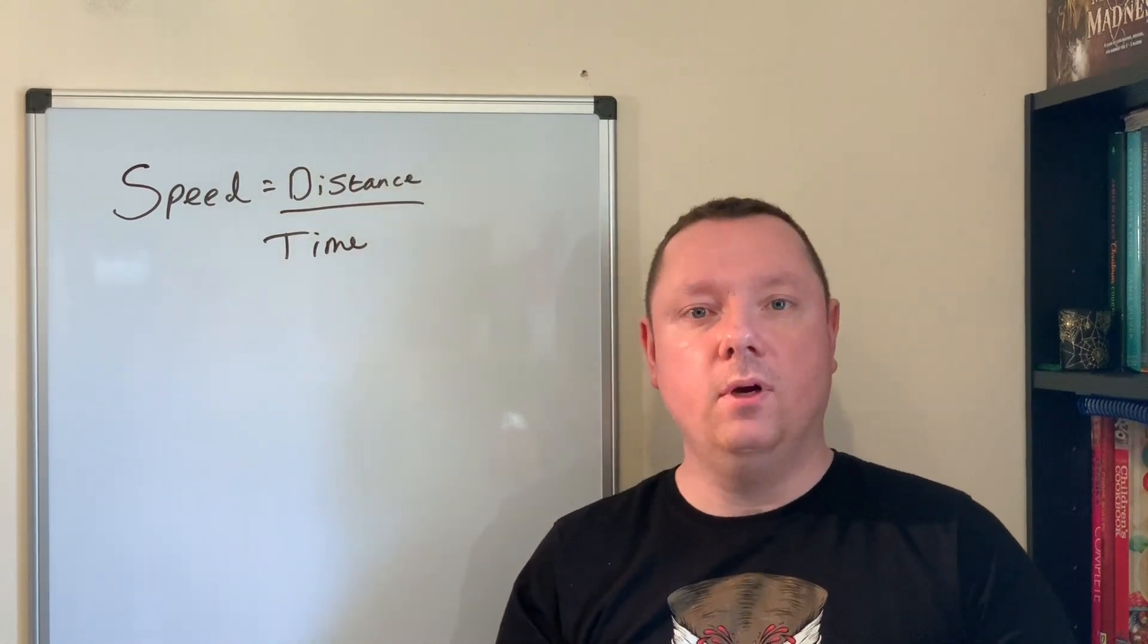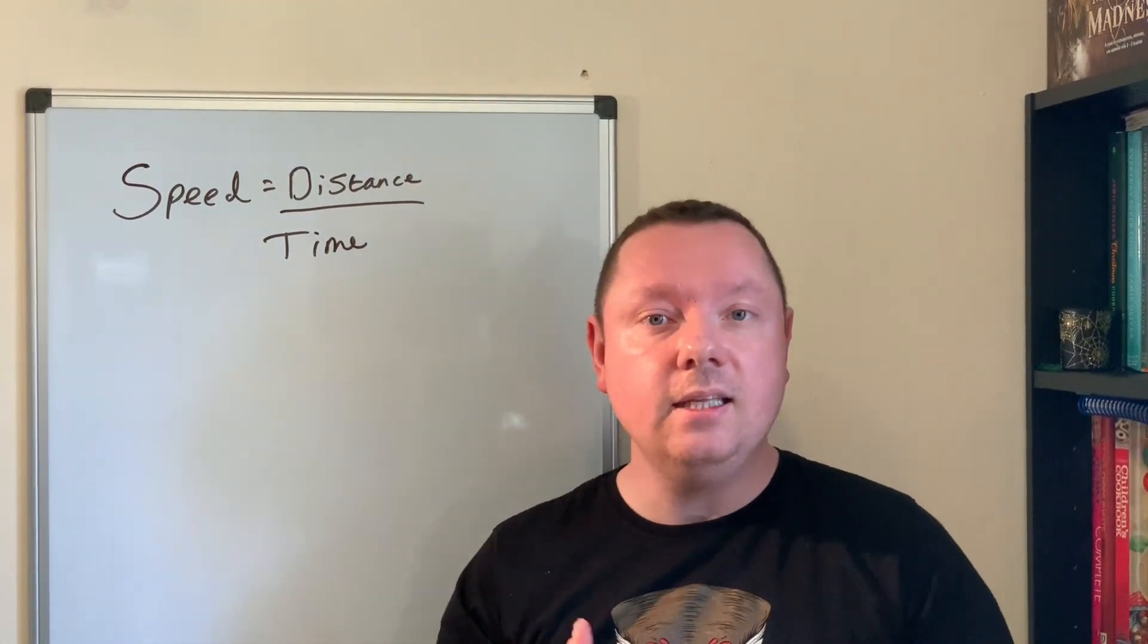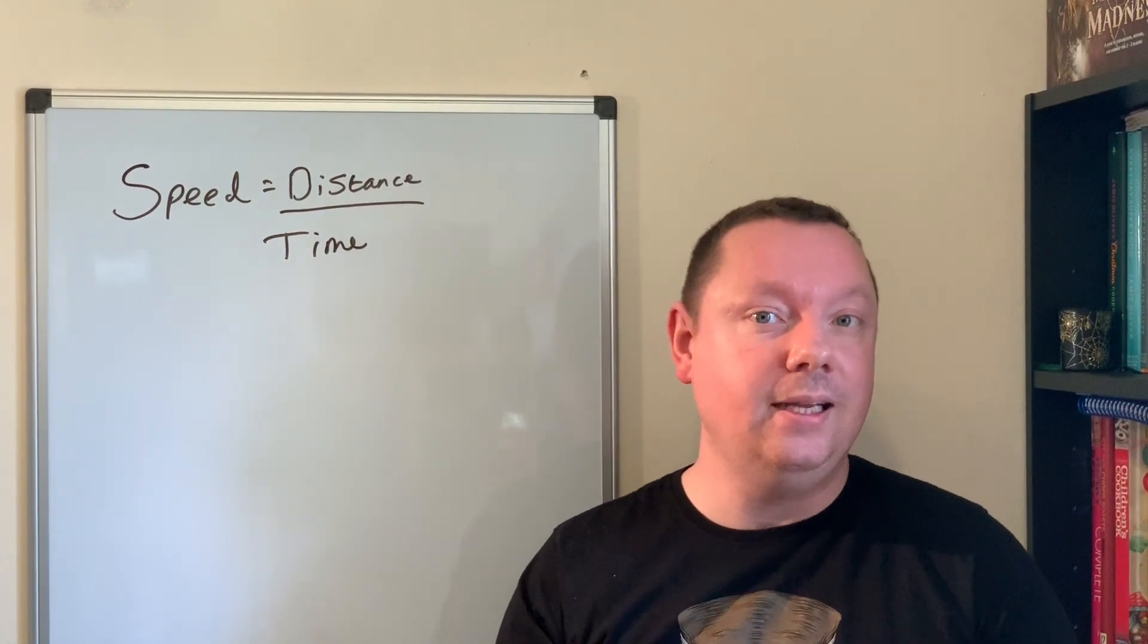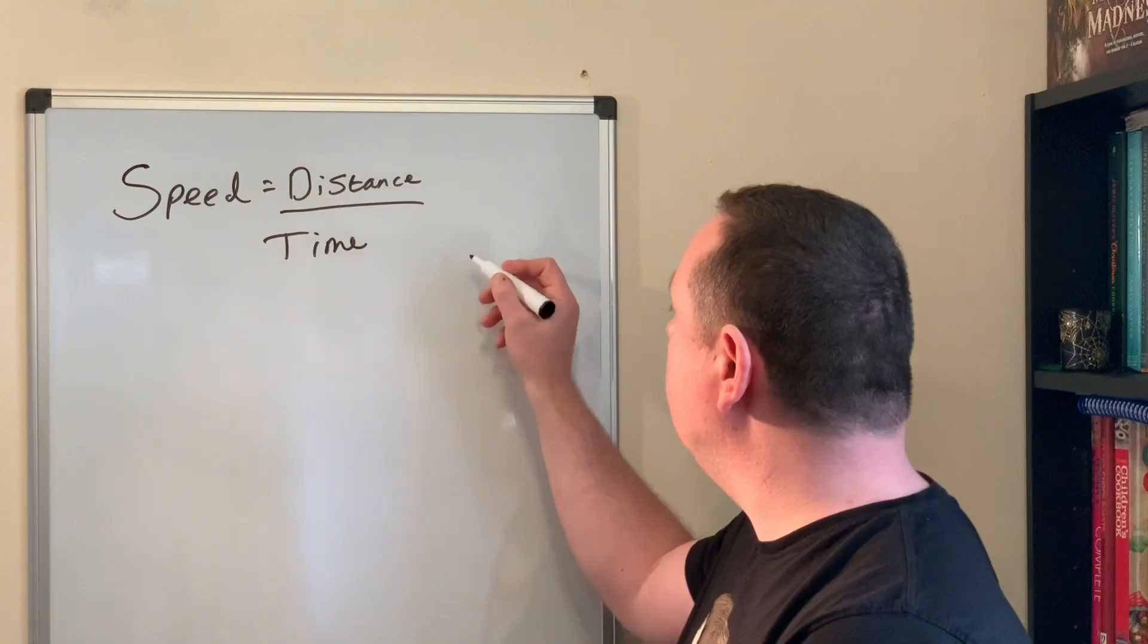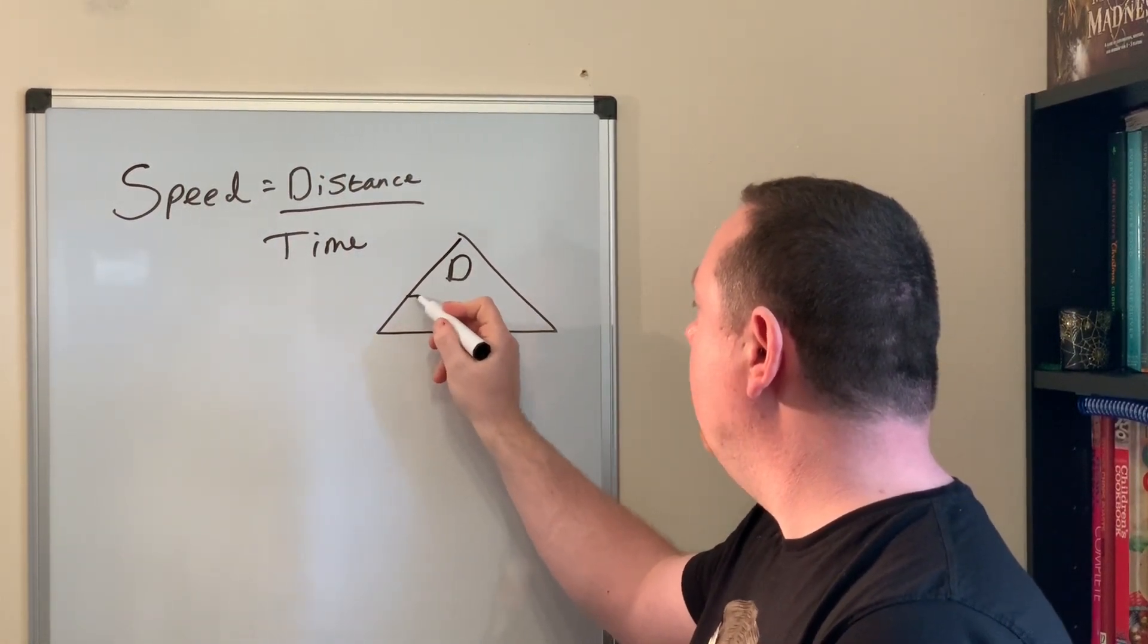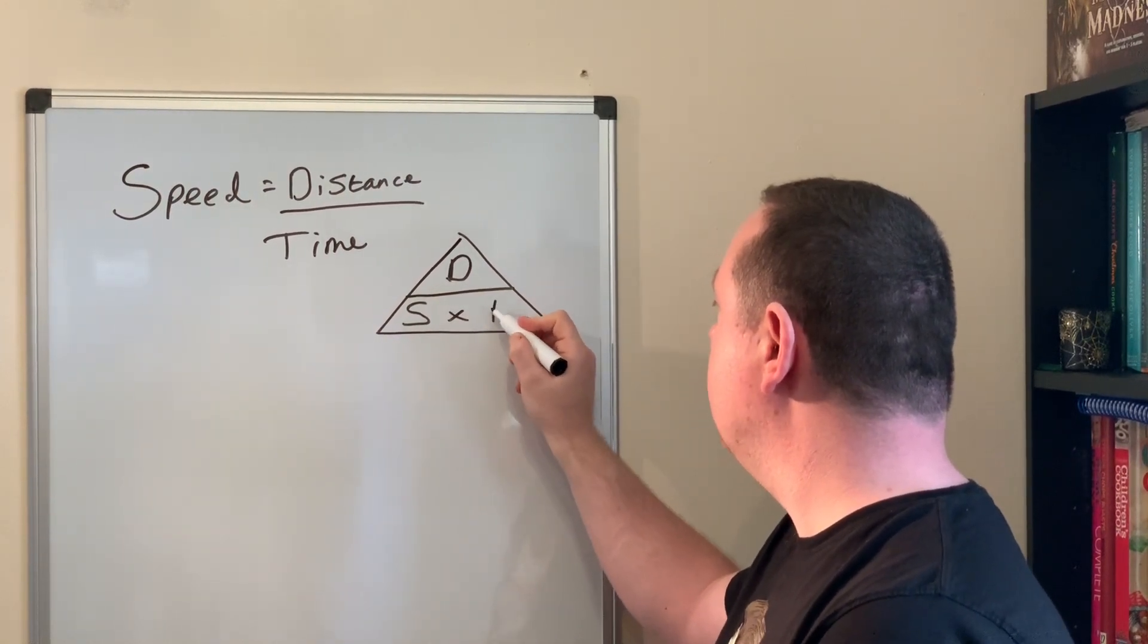We're going to use that formula to calculate speed, but we can also rearrange it to calculate distance and time. We can use our triangle to work this out. I'll put D at the top for distance, draw a line.